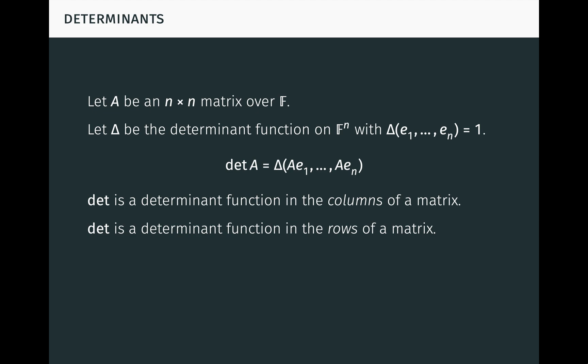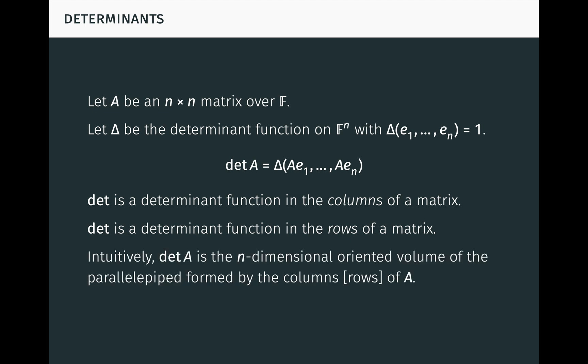This provides a different perspective. Rather than viewing a matrix as a linear map, we can also view it as a collection of column or row vectors, and the determinant tells us about these vectors. Intuitively, det A is the n-dimensional oriented volume of the parallelepiped formed by the column vectors, or row vectors, of A. While the columns and rows in general form different parallelepipeds, those parallelepipeds always have the same volume. A number of important properties follow from these observations.